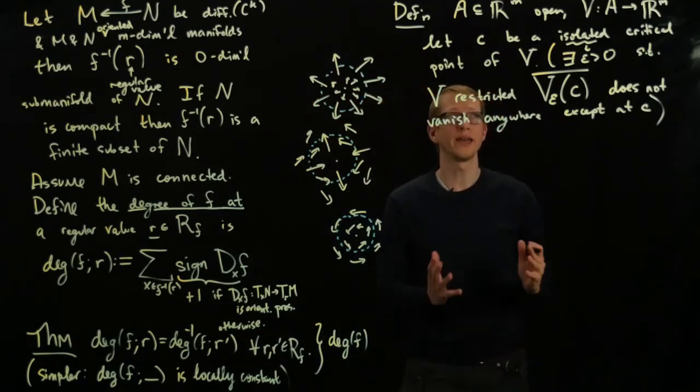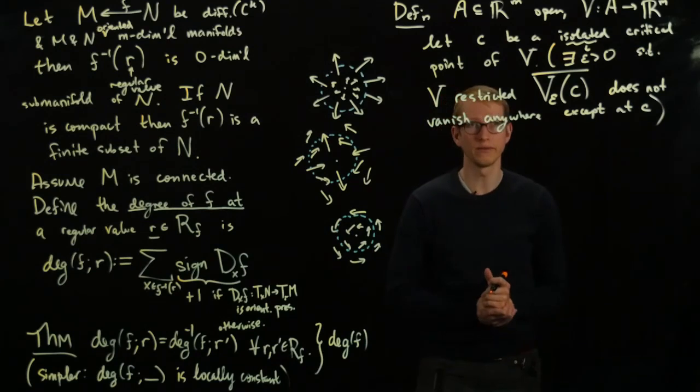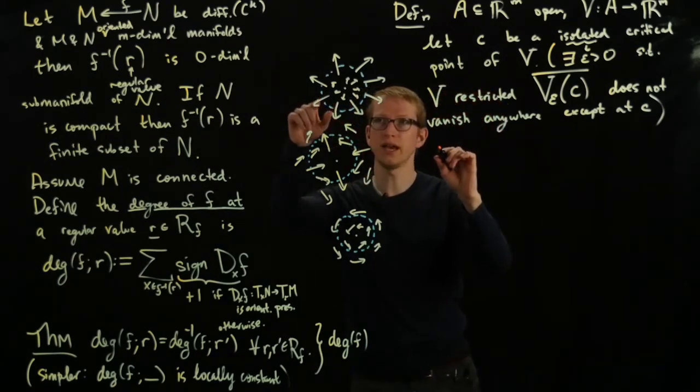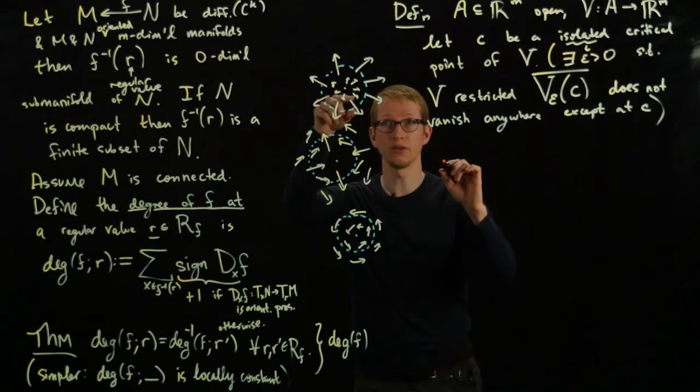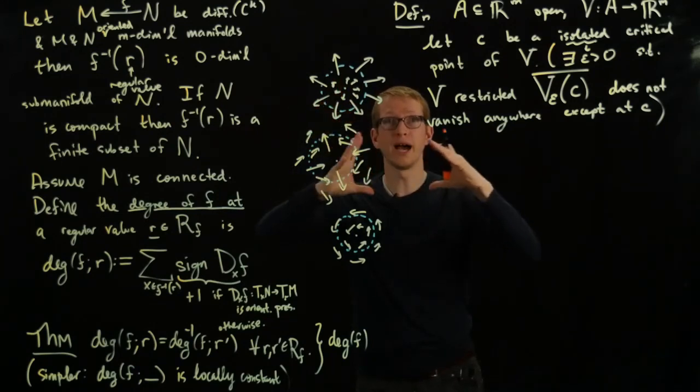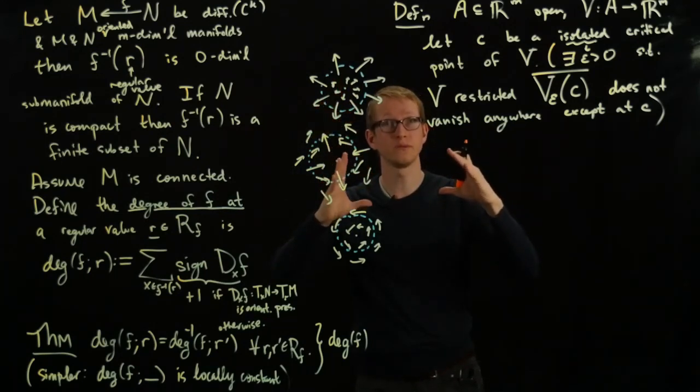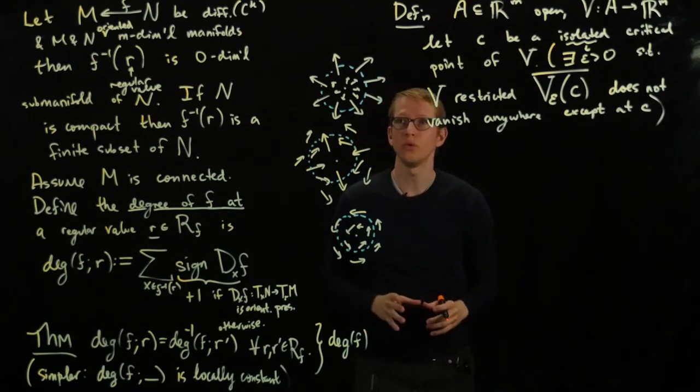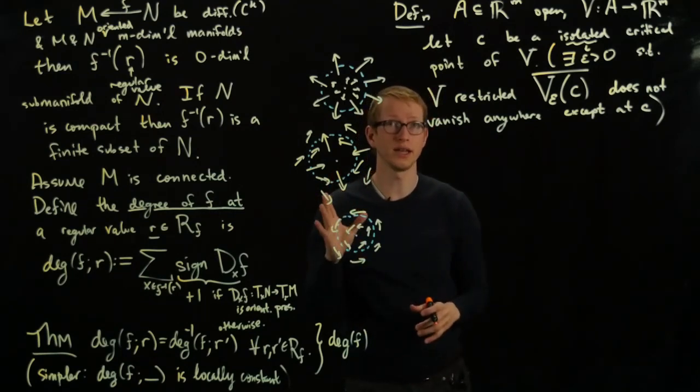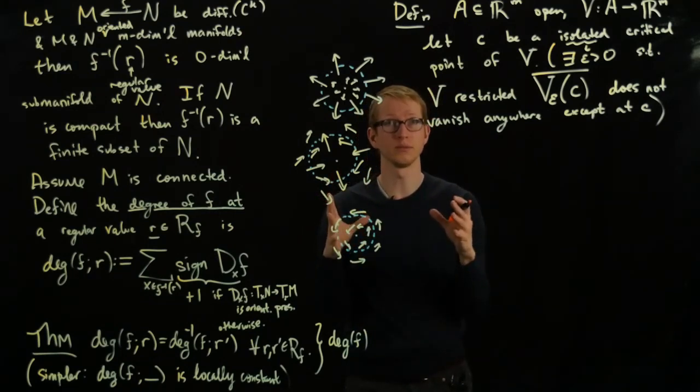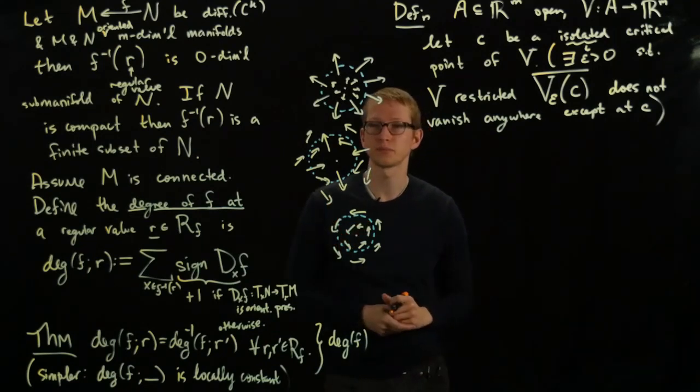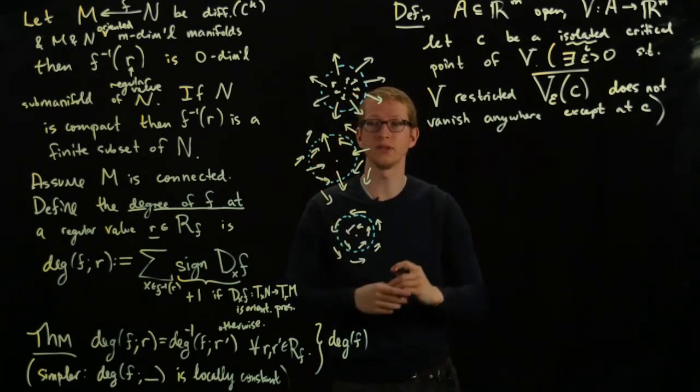So if I have such an isolated critical point of a vector field of V, we can actually look at this disk around the critical point. And the boundary of this disk is going to be some sphere. Now, the sphere has a natural orientation on it because it's a subset of Euclidean space. And we have a vector field that restricts to that sphere.